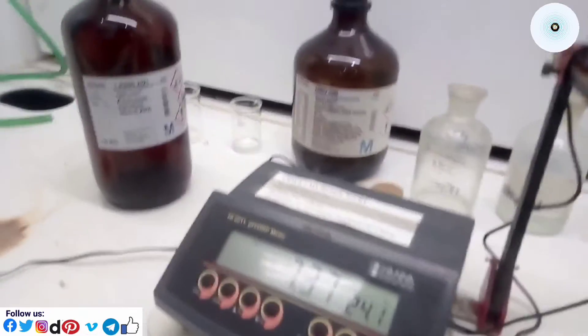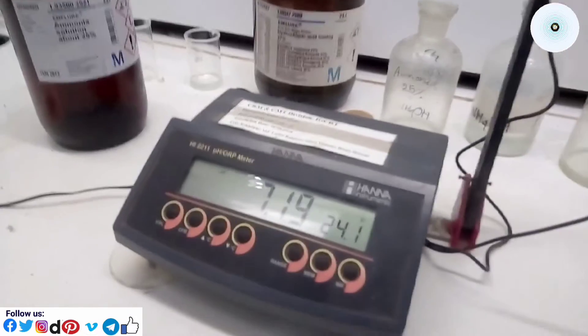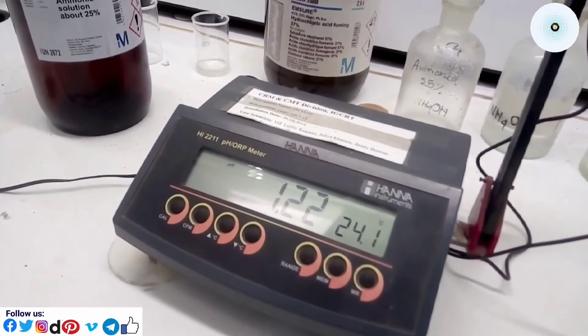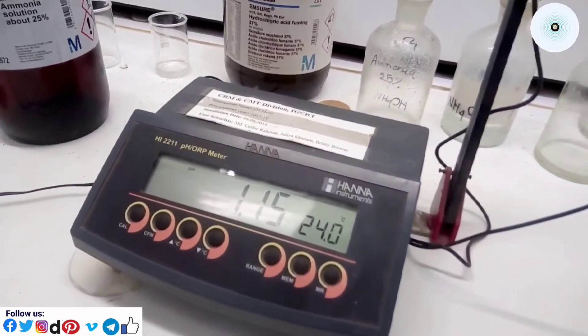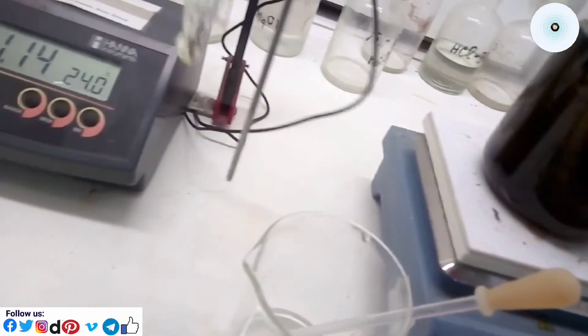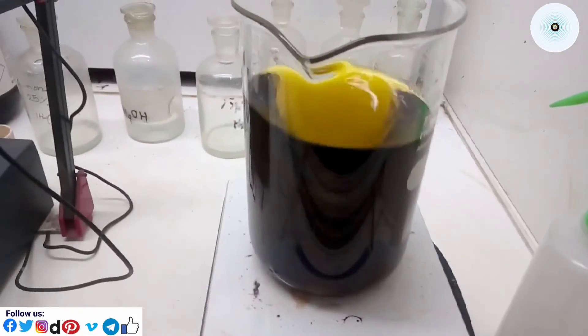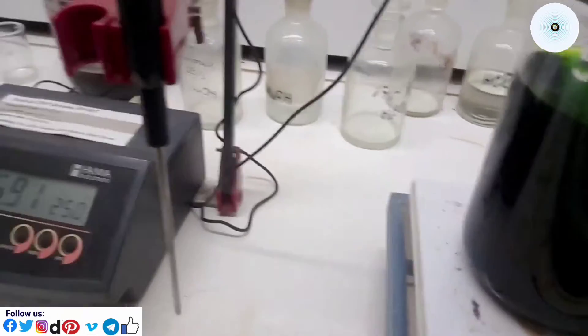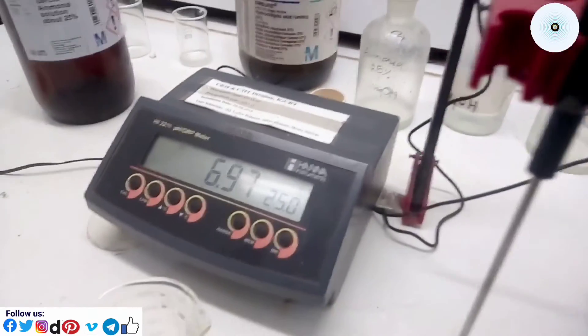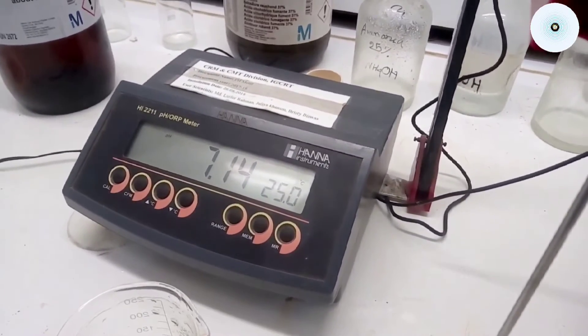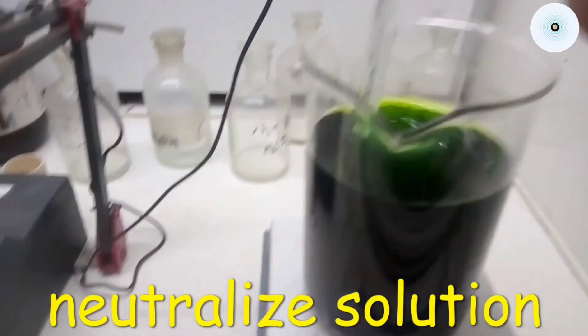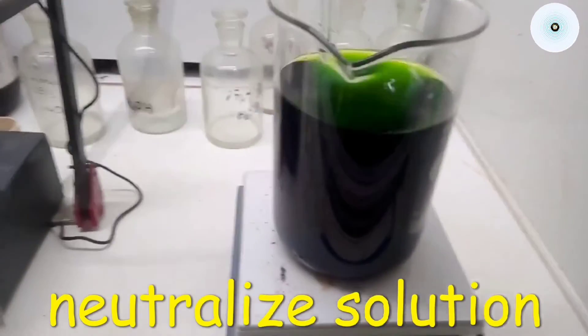After that, apply pH meter to measure the solution of metal nitrates. The pH is 1.15, which is more acidic. Finally, we get pH 7.14. This means that the metal nitrate solution has become neutralized.